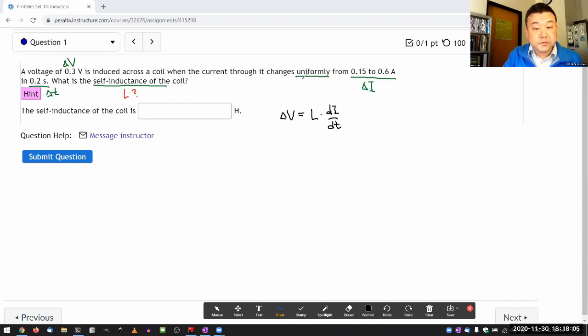Because it's changing uniformly, I can say the instantaneous rate of change is the same as the average rate of change—that is, the total change of current over the total duration of time.